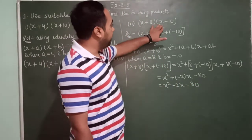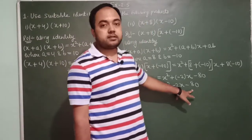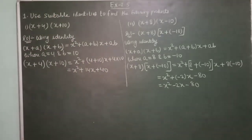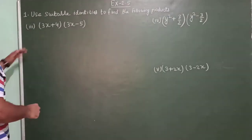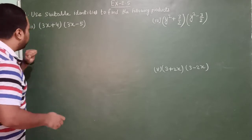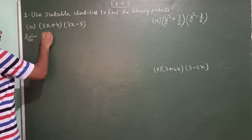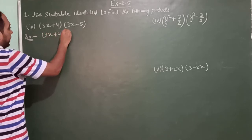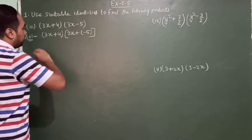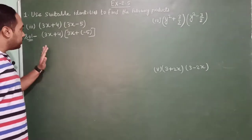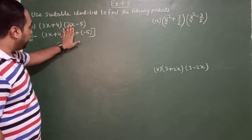So the product of (x + 8) into (x − 10) is equal to x squared minus 2x minus 80. Now the third one is (3x + 4) into (3x − 5). And (3x − 5) can be written as 3x plus (−5). This is of the form x plus a into x plus b.